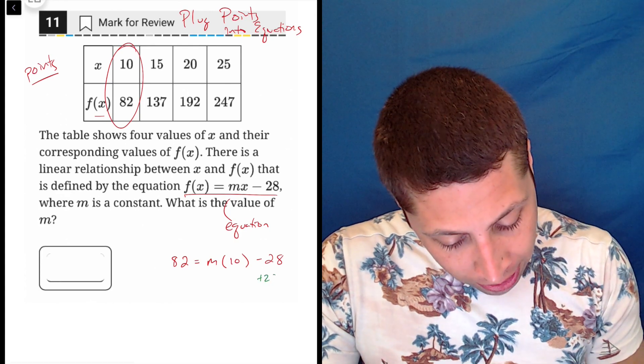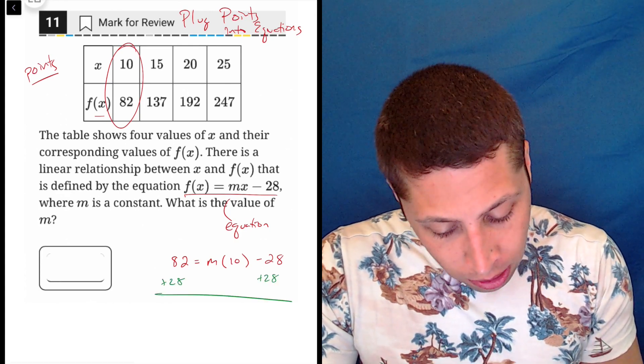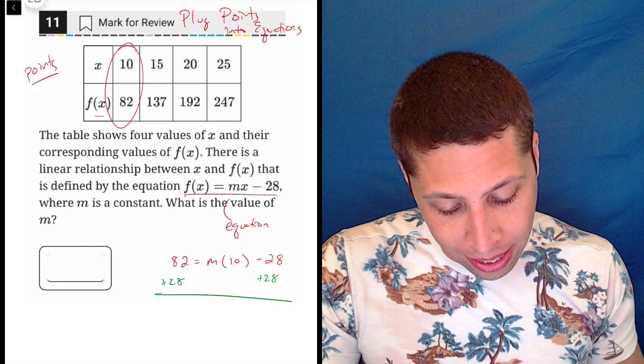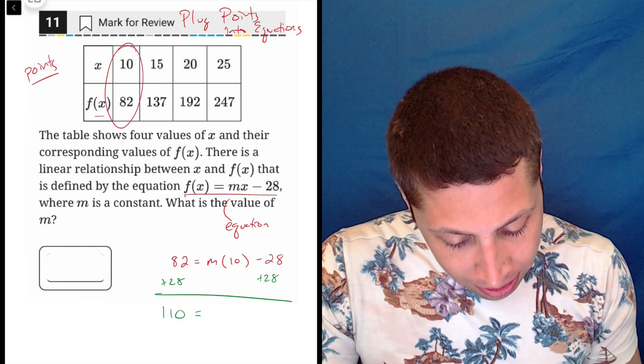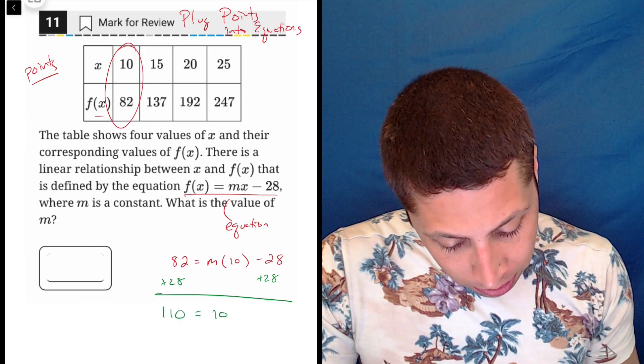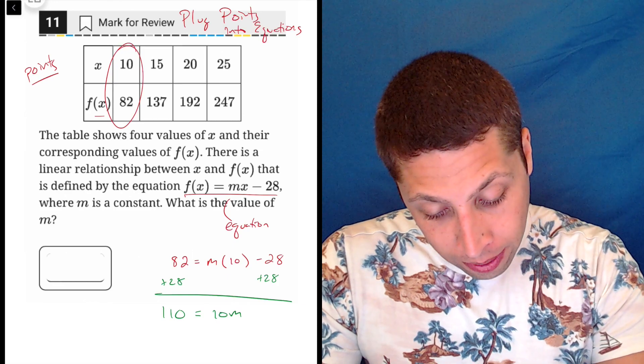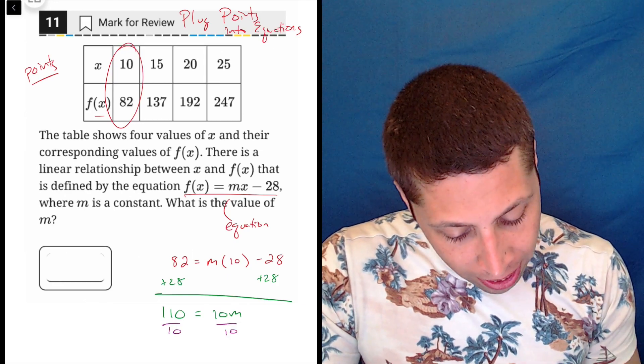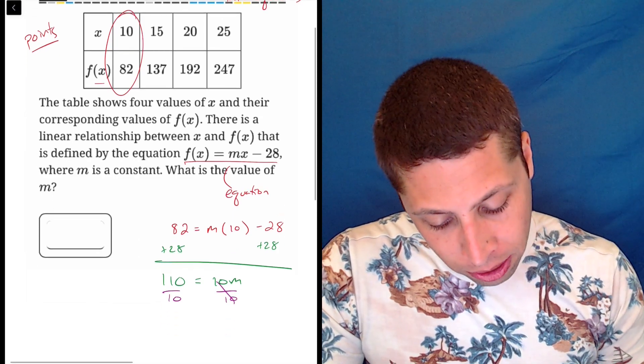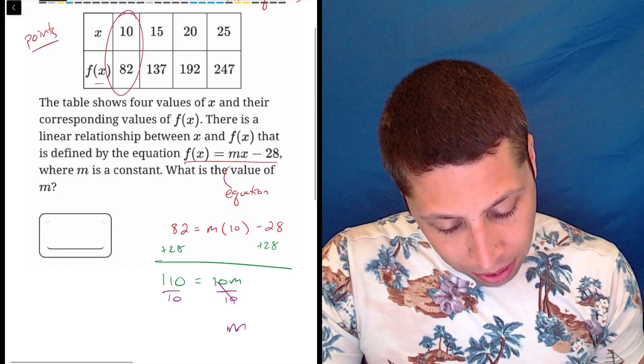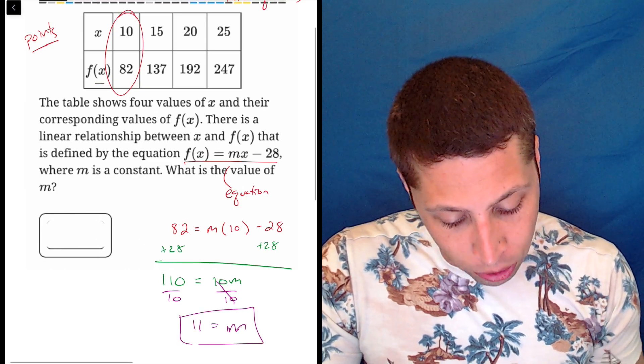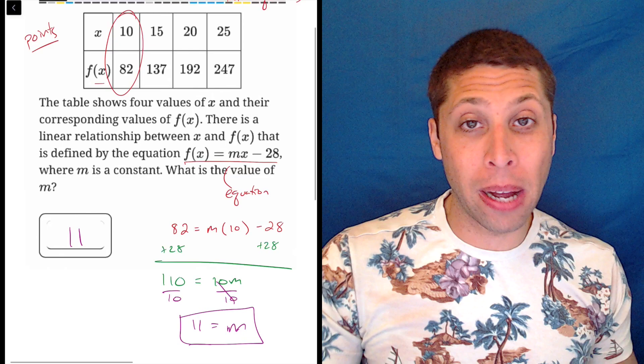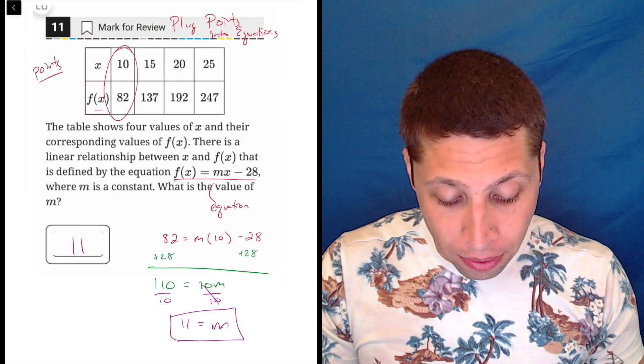So let's add 28 to both sides. We get 28, well that would be 90, that would be 110, is equal to 10m. And then let's divide both sides by 10. And basically what happens here is it lets us cross out the 0, so we have m is equal to 11. We could have done any of that in the calculator, but it's so easy I didn't bother. And there you go.